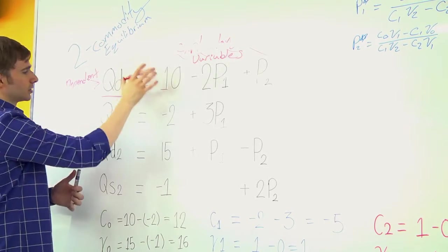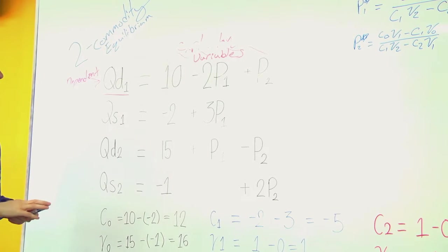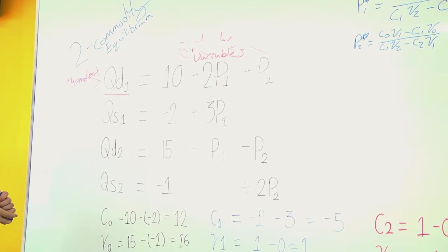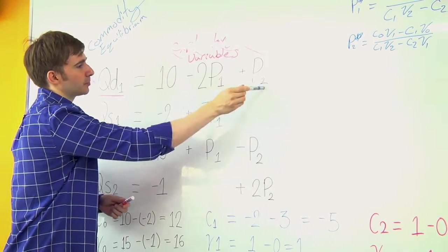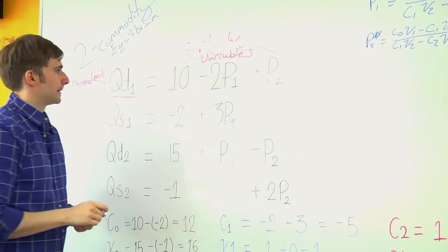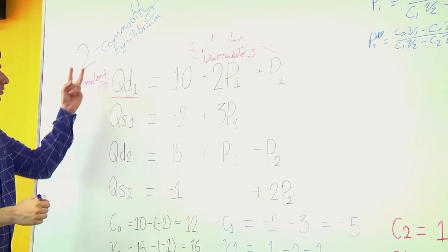So we can get these equations the same way in our previous example. But now we have P1 and P2. So we're doing two commodities.